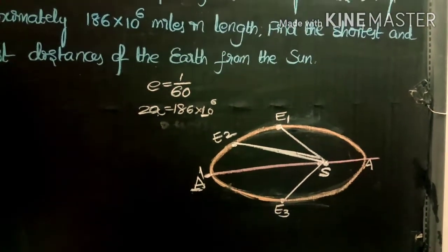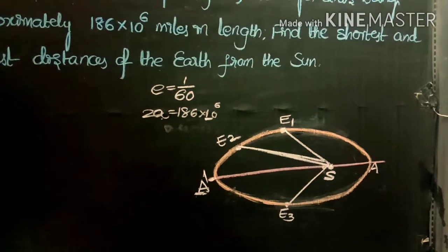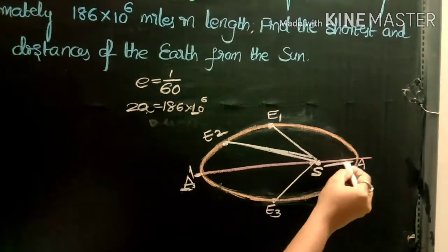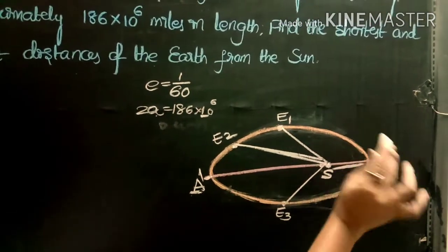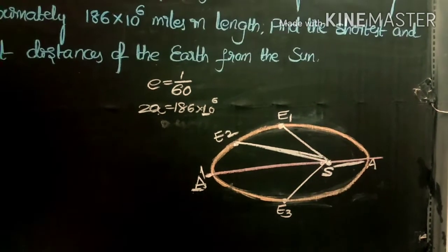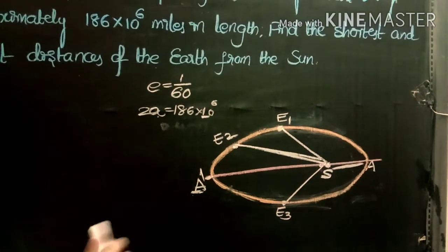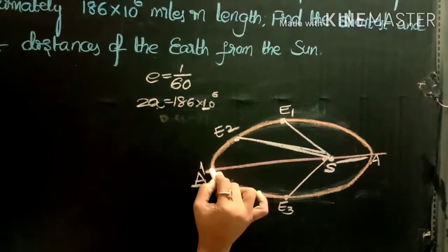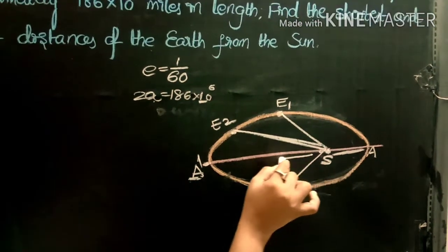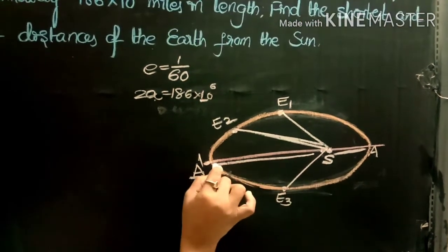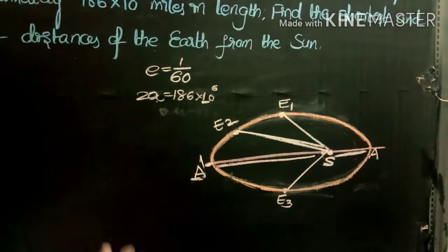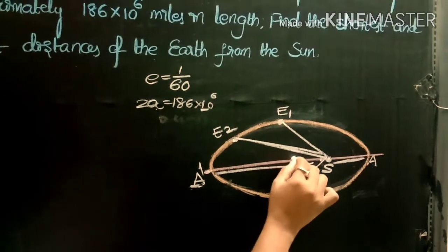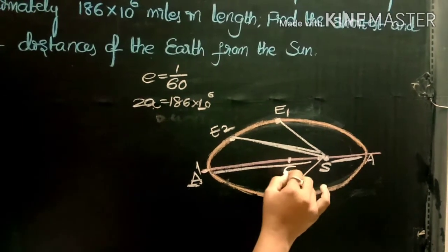Clearly from the diagram, the shortest distance between the sun and the earth is SA, and the longest distance between the sun and the earth is SA'. This is the center of the ellipse.